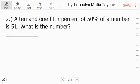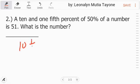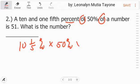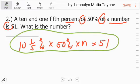Now let's do number 2. 10 and one-fifth percent of 50 percent of a number is 51. What is the number? 10 and one-fifth percent of - multiplication - 50 percent of - multiplication - let n be our number, is equals 51. So this is our equation.